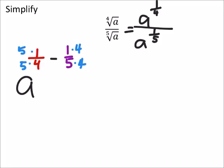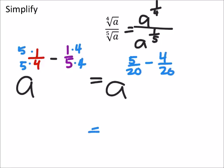And that gives me a to the power of five-twentieths minus four-twentieths. Which would be the same as a to the power of five minus four is one. Then our denominator was 20.